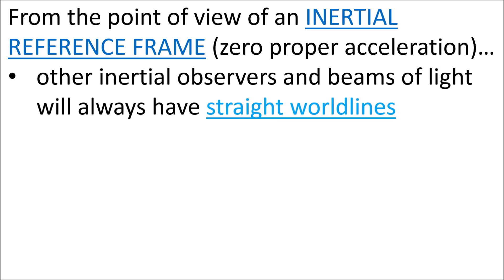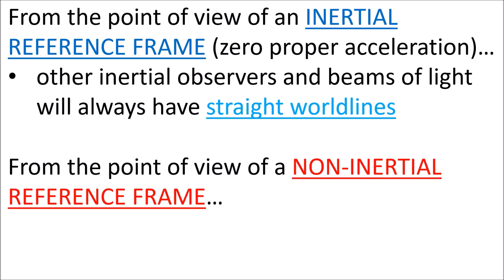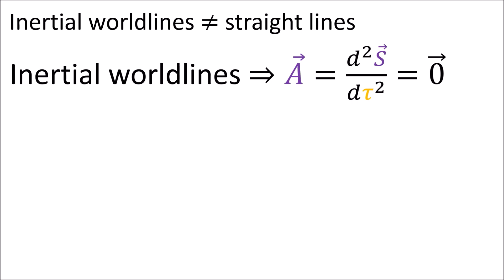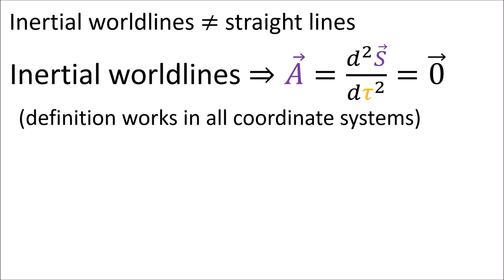So it is more correct to say that from the point of view of an inertial reference frame that measures 0 on an accelerometer, other inertial observers and beams of light will always have straight world lines. But from the point of view of non-inertial reference frames, inertial observers and beams of light can have curved world lines. So we should stop thinking of inertial world lines as being straight. Instead, the correct definition of an inertial world line is a world line that has a zero four-acceleration vector. This definition is correct for all coordinate systems, whether inertial or non-inertial.